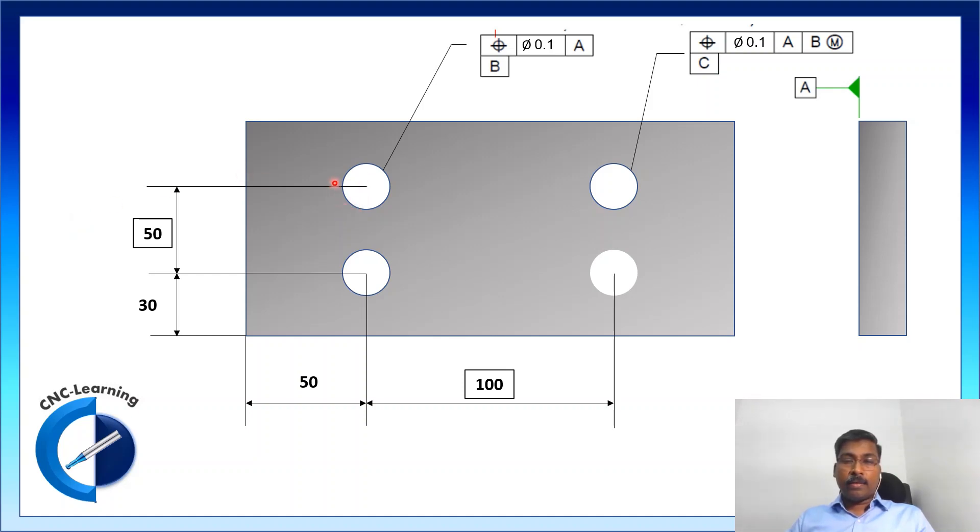And there are three datums in this drawing. Datum A is for this plane and datum B is of one hole. And positions of other holes are controlled through this position tolerance.